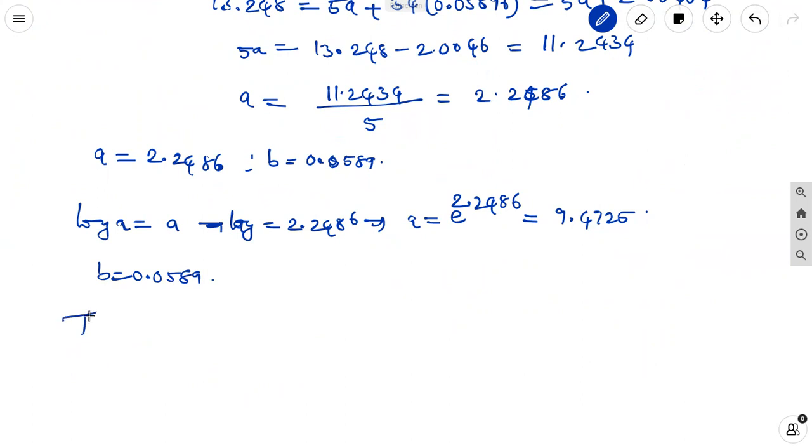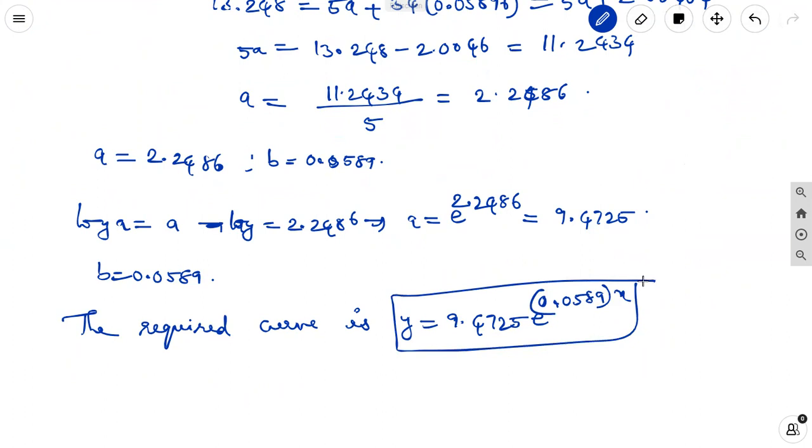Then the required curve is small y equal to a, that is 9.4725 e power 0.0589 into x. This is the best curve. We can correct it to 3 decimals means 0.059. It is the solution.